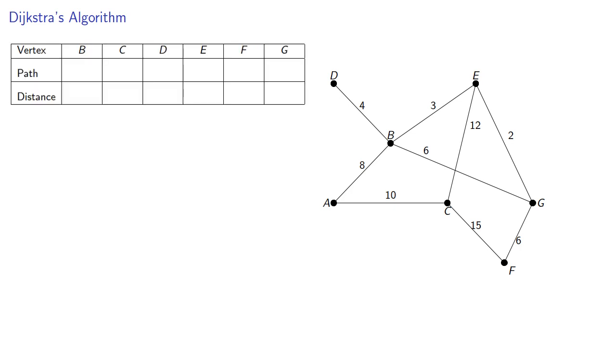So we'll keep track of our information in a table, and we'll also note both the path and the shortest distance. Now initially, we know no distances, so we can set all the distances to infinity, or negative one, or empty set, or something that indicates we haven't found any distances yet.